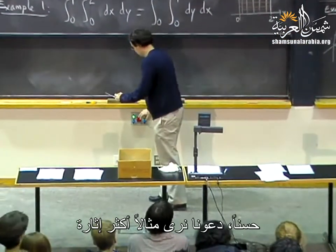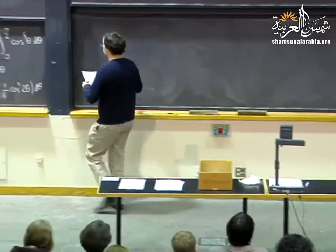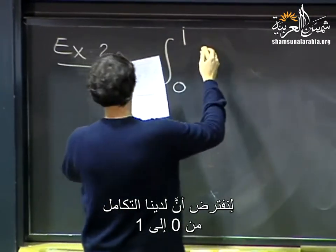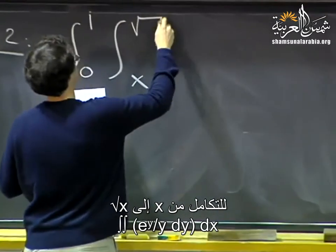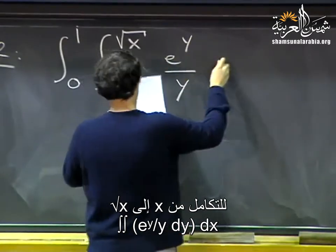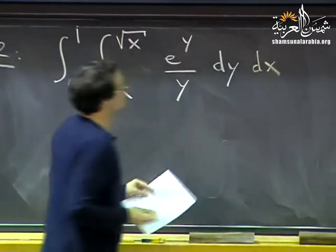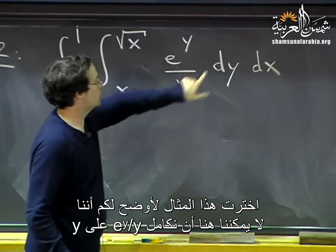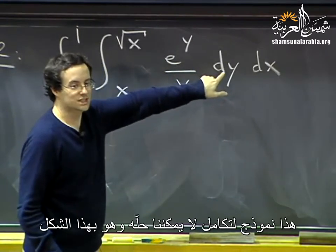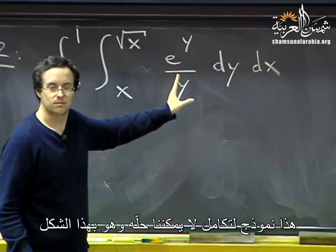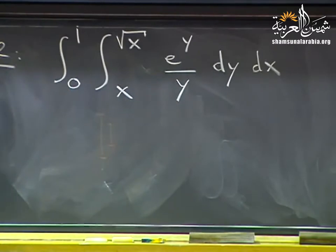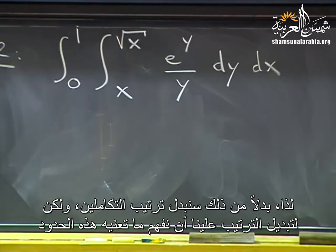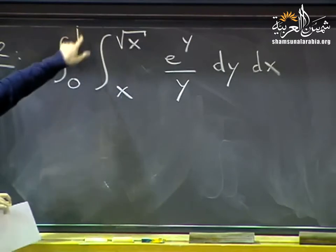Let's do a more interesting example. Compute the integral from 0 to 1 of the integral from x to √x of e^y/y dy dx. I chose this because there is no way to integrate e^y/y with respect to y in closed form, so this integral cannot be computed as given. Instead, we'll switch the order of integration. To do that, we must understand what the bounds mean.